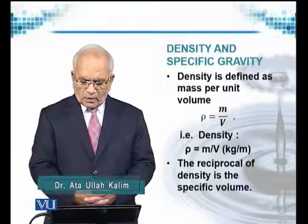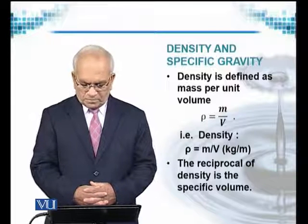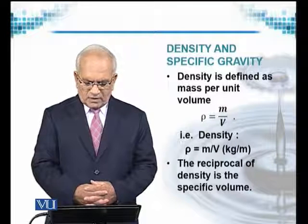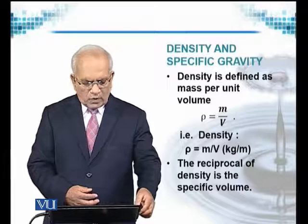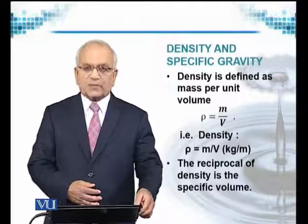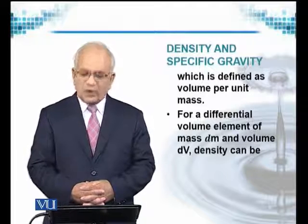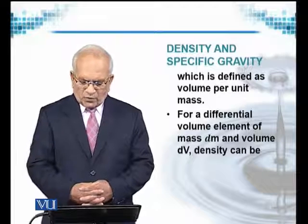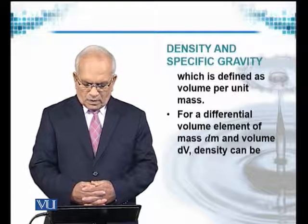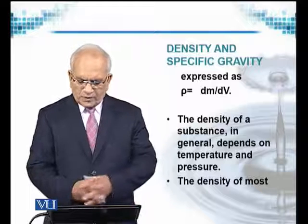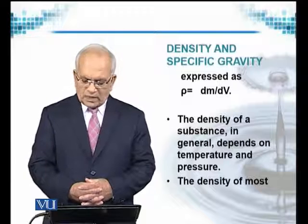Different units apply when using the British system. The reciprocal of density is specific volume, where 1/rho is defined as volume per unit mass. For a differential volume element of mass dm and volume dv, density can be expressed as rho = dm/dv.